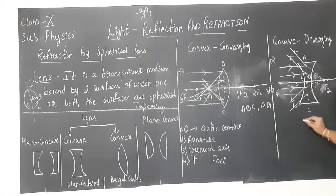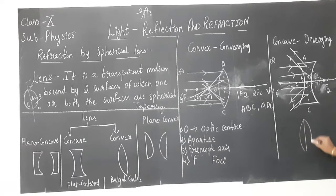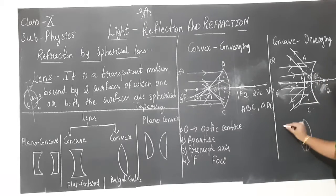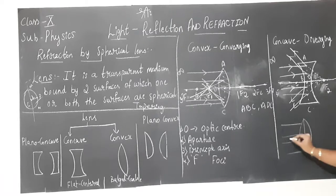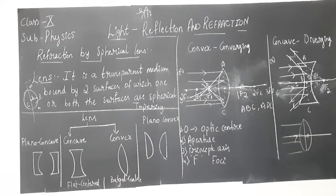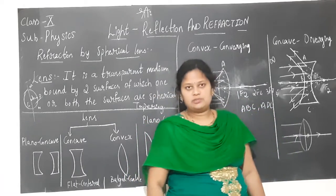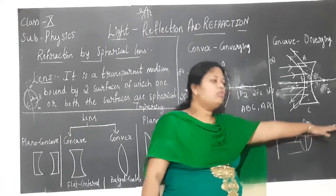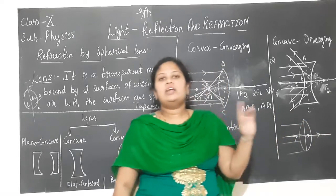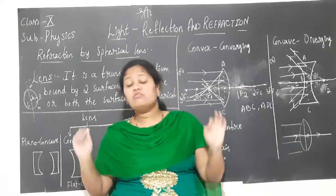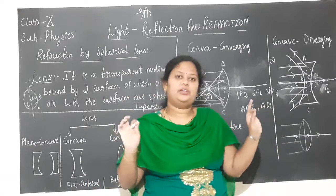It is not that rays of light pass only above and below the principal axis — they come from all directions. The ray of light passing through the optic centre will travel without any deviation. That is one important point you should keep in mind.